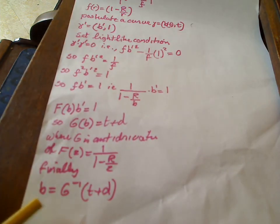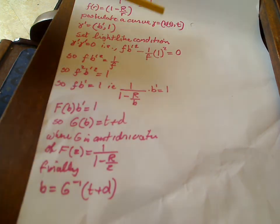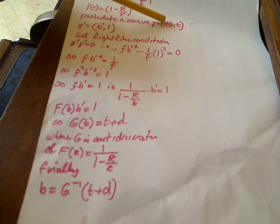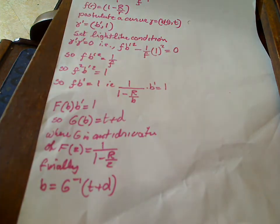Then you have the b that you're looking for. It's just G inverse, if it's invertible, of (t + d). It's going to turn out to be some kind of natural logarithm or something like that—you can easily look that up. And finally, your curve, your geodesic, is just going to be whatever this b is, in here, comma t. So that's it, easy peasy.